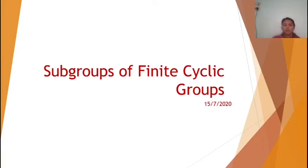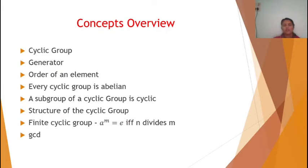Good morning. Today we have the concepts of subgroups of finite cyclic groups. We have already covered the concept of a cyclic group — a cyclic group is a group which can be generated from a single element a, called the generator. The order of an element is the smallest positive integer n such that a raised to n equals e.